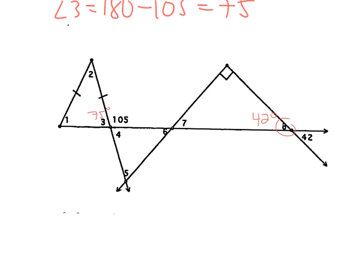Okay, let's see how you did. Starting with the left triangle — my left triangle is isosceles, so my angles across from the legs are congruent. So angles 1 and 3 are congruent, meaning angle 1 is 75 degrees. The angles sum to 180, so angle 2 is 30 degrees. Angles 3 and 4 are vertical, so angle 4 is also 75 degrees. Let's move to the triangle on the right. The triangle sums to 180, so 180 minus 90 minus 42 gives angle 7 as 48 degrees. Angle 6 is 48 degrees because they are vertical angles. Angle 5 is 180 minus 75 minus 48, which is 57 degrees.